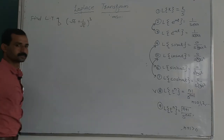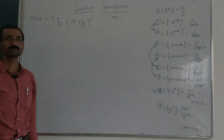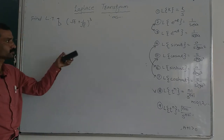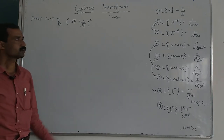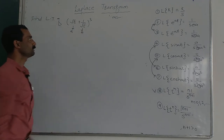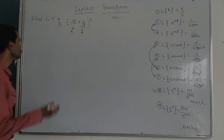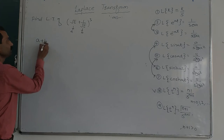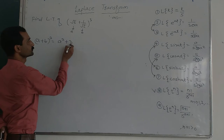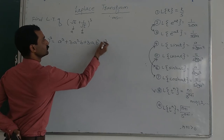Now we take an example: find Laplace of (root t + 1 upon root t) whole cube. To solve this, we first need to expand using the (A+B)³ formula. If we let A equal root t and B equal 1 upon root t, then we need to expand (A+B)³. You know that (A+B)³ equals A cube plus 3A squared B plus 3A B squared plus B cube.